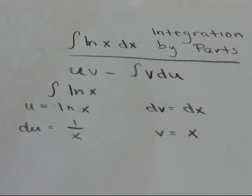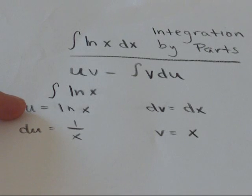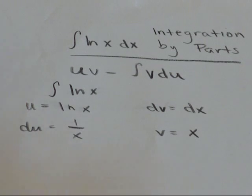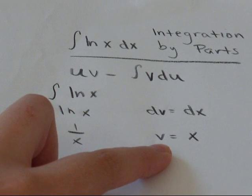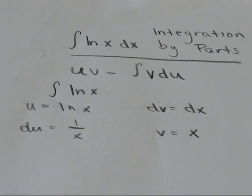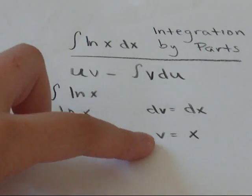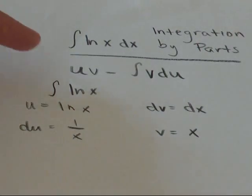So in this example, if we let u equal log x, by default, dv equals dx and the integral of dx is just x. I'm going to plug what we found for these four variables into this equation.